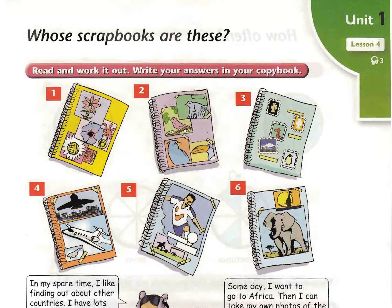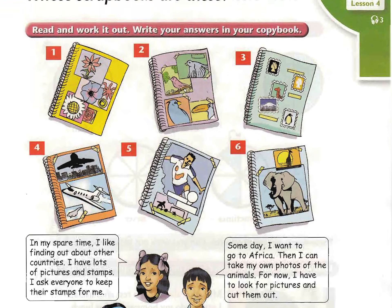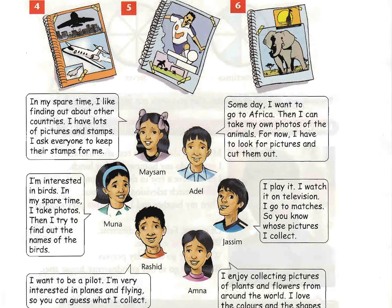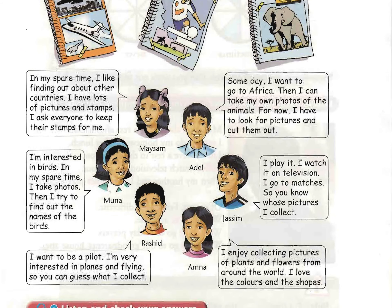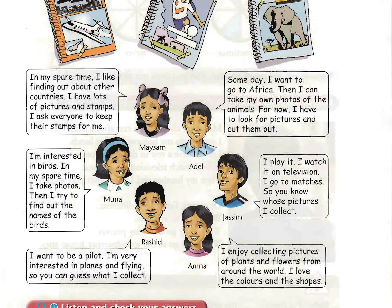Lesson four, track three. Whose scrapbooks are these? Band one: listen and check your answers. Number one is Amna's, number two is Mooner's, number three is Maysam's, number four is Rashid's, number five is Jasim's, number six is Ardell's.